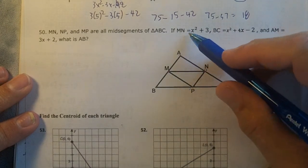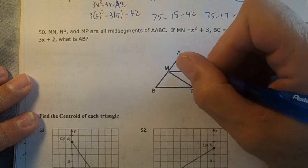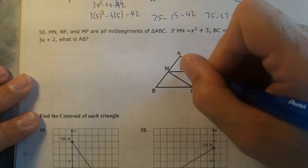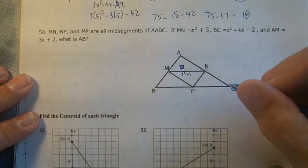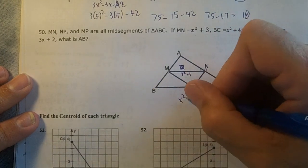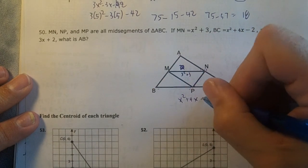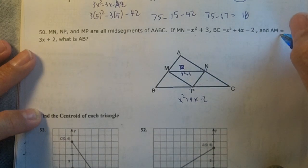If MN is x² + 3, BC from here to here is x² + 4x - 2, and AM is 3x + 2.